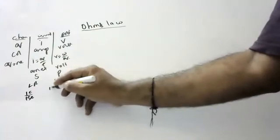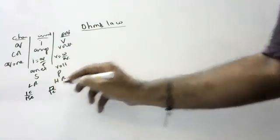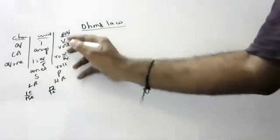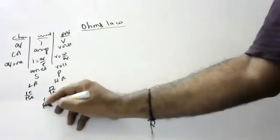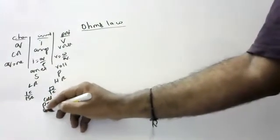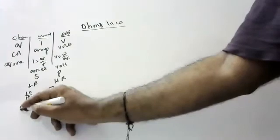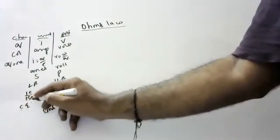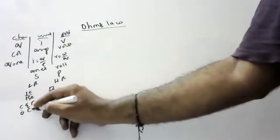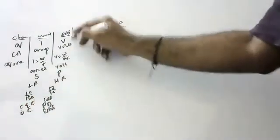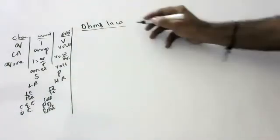One ampere is defined as one coulomb flowing per second. One volt is defined as one joule per coulomb. Source of potential includes a cell or battery. We also discussed EMF, electric circuit, conventional current, open circuit, and closed circuit.